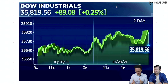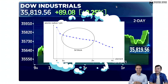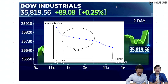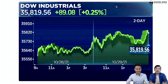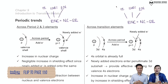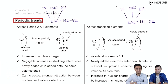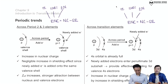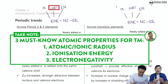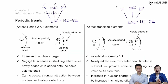Something more predictable than the stock market — chemistry! There are periodic trends we can rely on. Looking at atomic properties, there are three properties in the syllabus: atomic or ionic radius, ionization energy, and electronegativity. These three factors are all mainly governed by the effective nuclear charge.